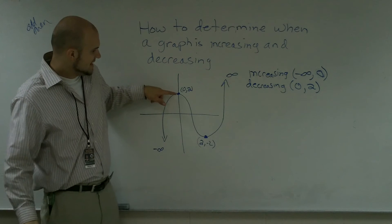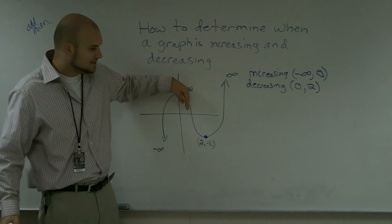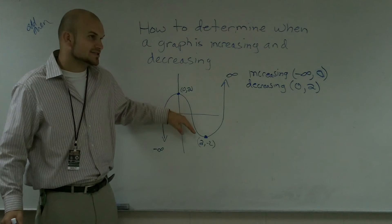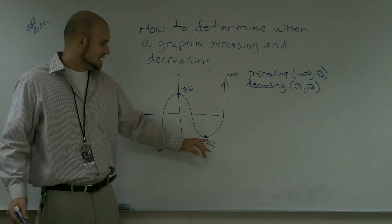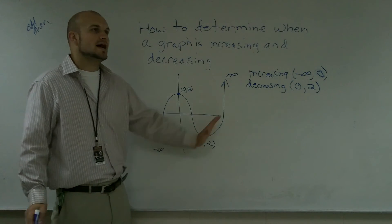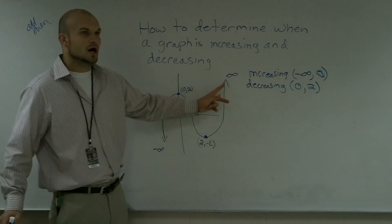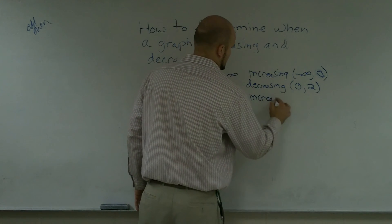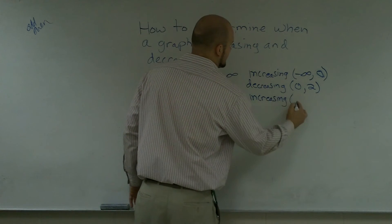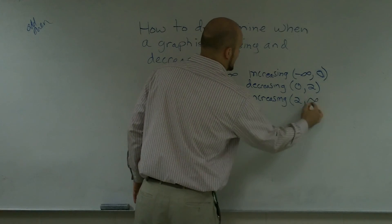It starts to very slowly decrease, then rapidly decreasing, and then again it starts to taper off. At point two it's at a change where it's going to turn back to increasing. This now increases to our positive infinity. We go back to increasing from the point of two to positive infinity.